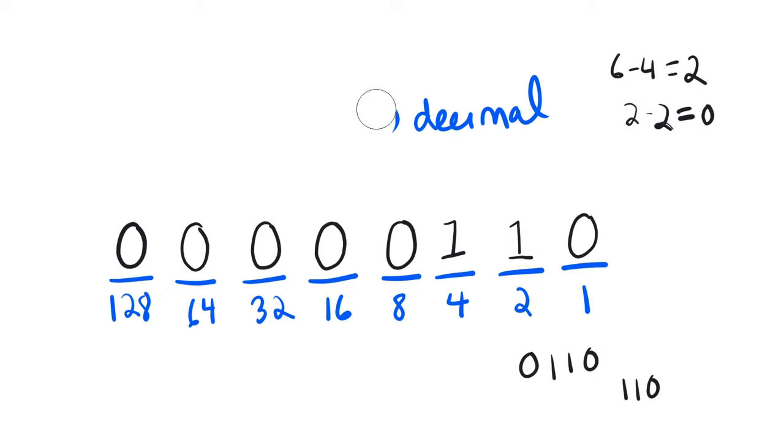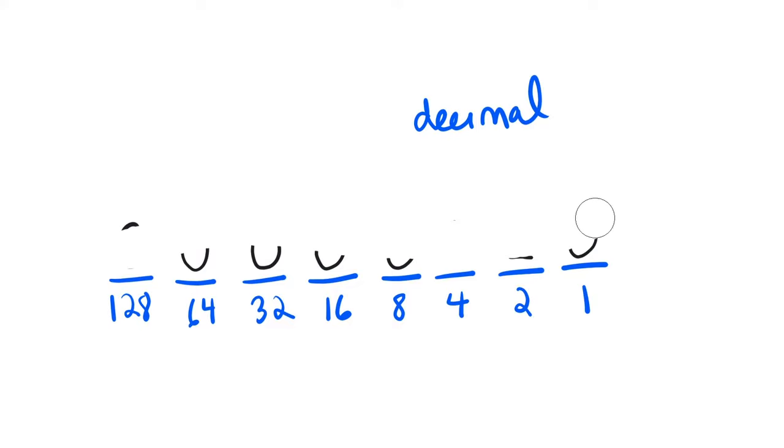Now let's try a bigger number. So let's erase all this work here. I want to keep my place values around, because those are handy and they're going to be the same, and just erase everything else. Okay, good enough. All right, so let's try the value 25. 25 decimal, how do we convert that to binary?